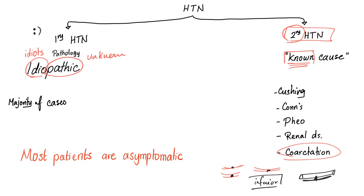Back to primary hypertension, which is idiopathic — unknown cause. By the way, this is the majority of cases; most cases of hypertension we do not know the cause. Secondary hypertension is less common; however, we love it because it's very easy to treat — you just diagnose the underlying cause and treat it. Remove the Cushing's, remove the Conn's, remove the pheo, and you're done. So how can you prescribe drugs for primary hypertension when you cannot know the root cause of the disease?